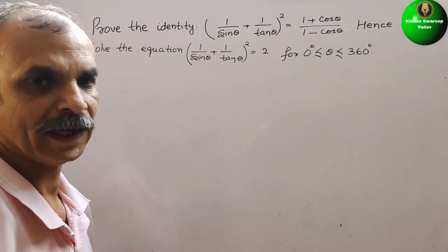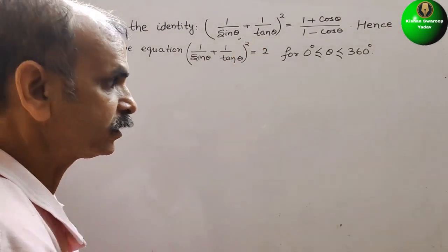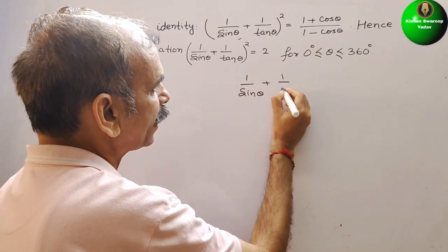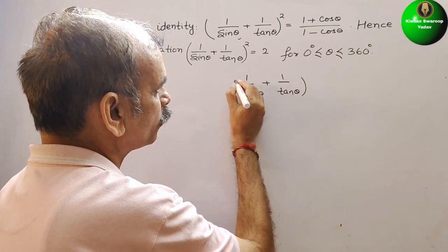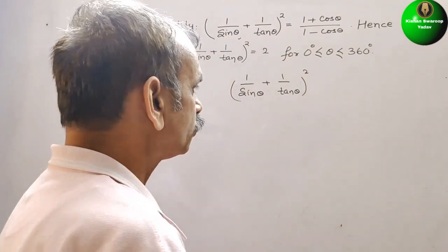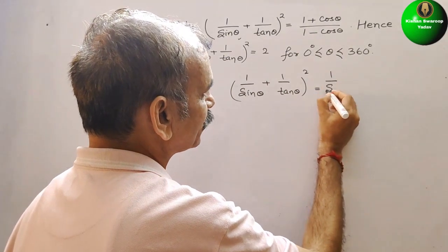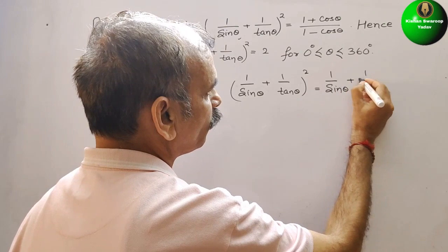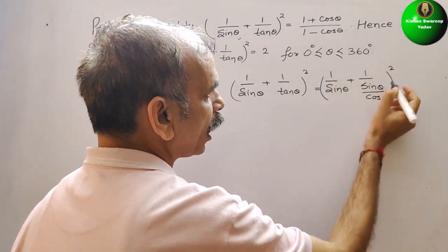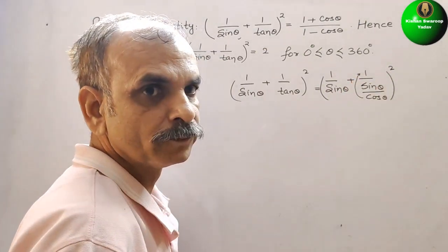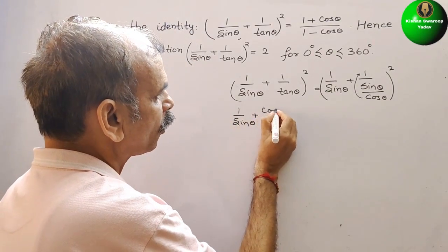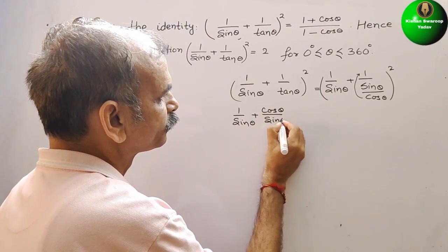So first we will take the LHS: (1/sin θ + 1/tan θ)². We will convert tan θ to sin θ/cos θ, so it becomes (1/sin θ + cos θ/sin θ)².